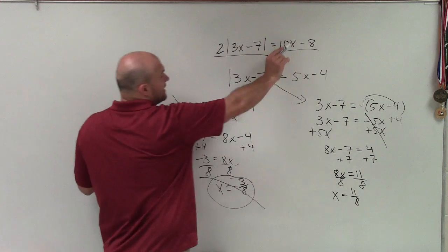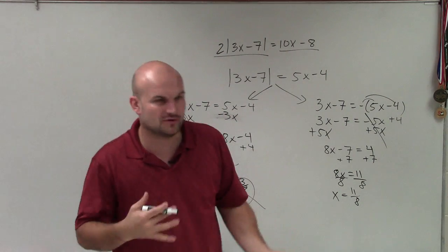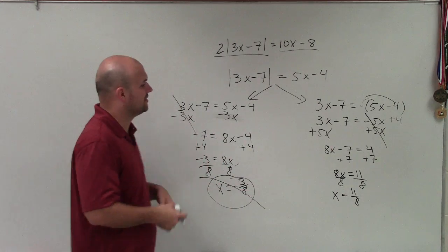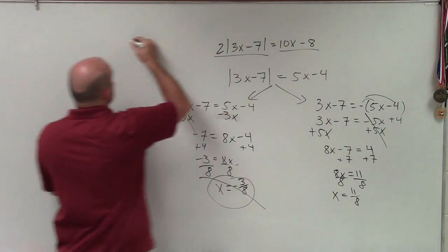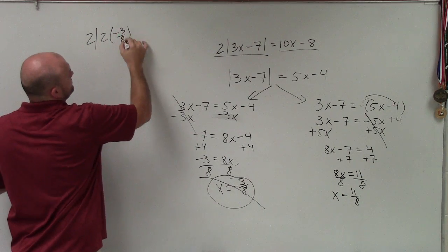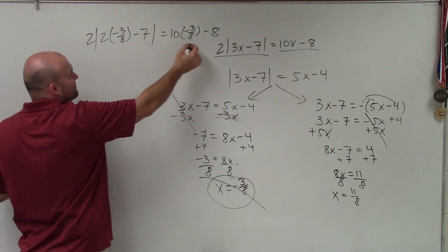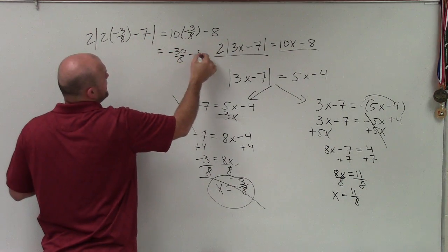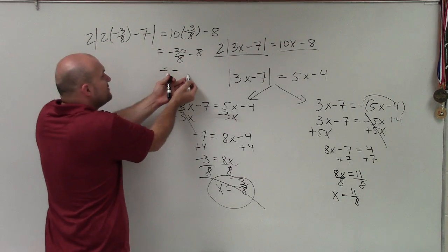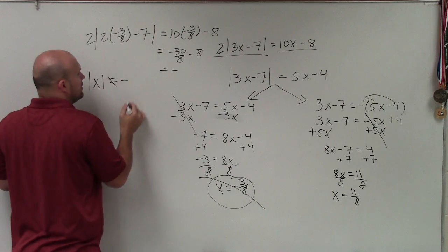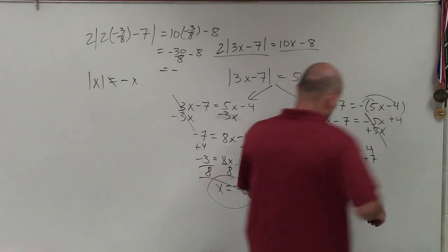However, if I plug in 11/8, and go ahead and do the math — you can check with your calculator — you'll notice that it will work. Negative 3/8 does not work because when you plug in negative 3/8, you're still going to have negative 3/8 minus 8, which gives you a negative number. An absolute value can never equal a negative number — absolute value is always positive. Therefore, the only solution we have is x equals 11/8. Thanks.